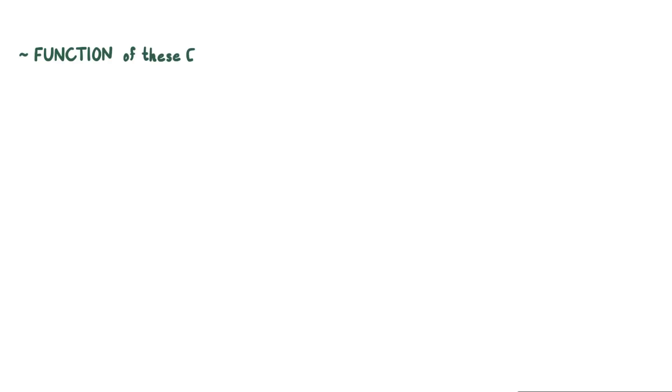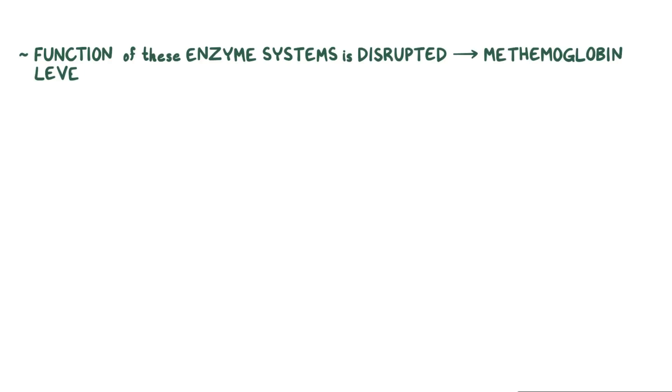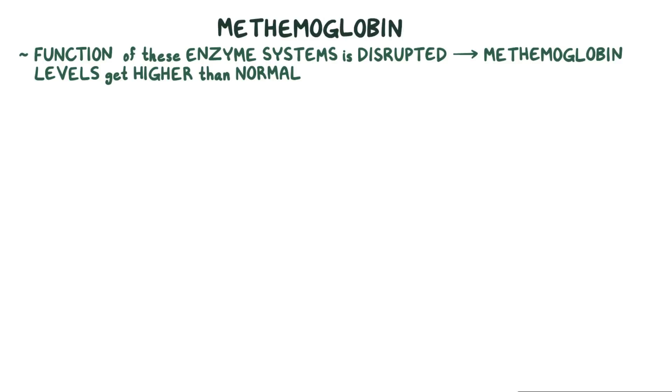However, if the function of these enzyme systems is disrupted, methemoglobin levels get higher than normal, and we call this condition methemoglobinemia.